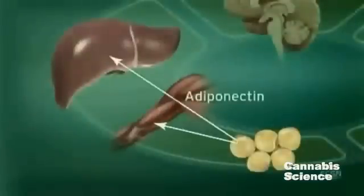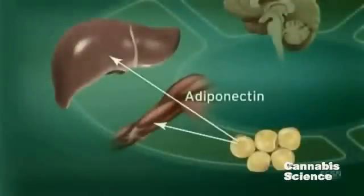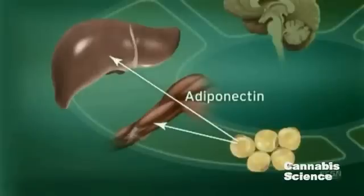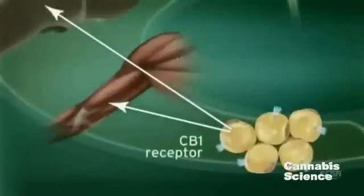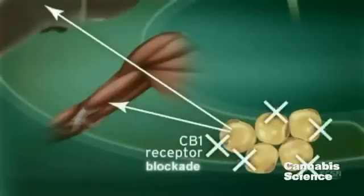Adiponectin, another hormone secreted by adipocytes, regulates lipid and glucose metabolism. Adiponectin is believed to regulate fatty acid oxidation in muscle and liver, thus improving insulin sensitivity. CB1 receptor stimulation in adipocytes reduces adiponectin, while CB1 blockade increases adiponectin synthesis.